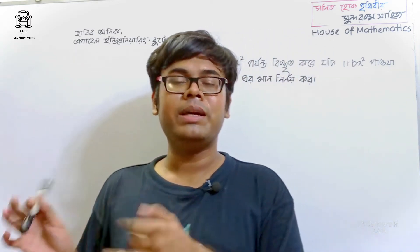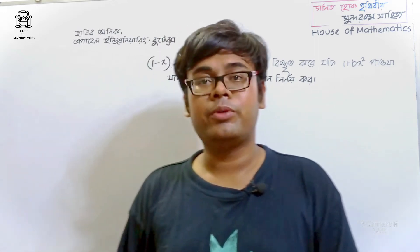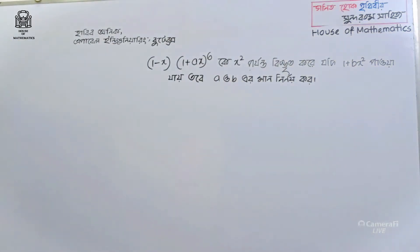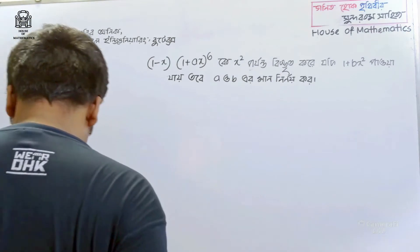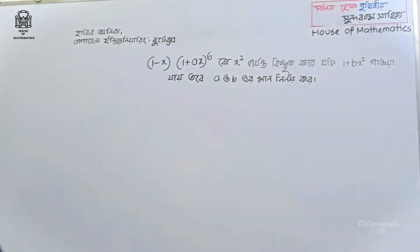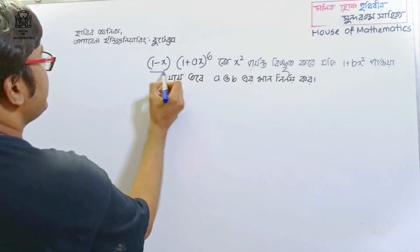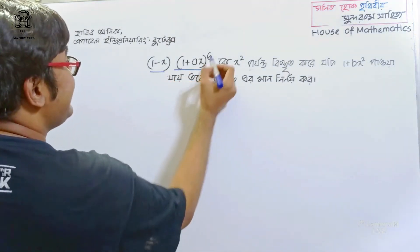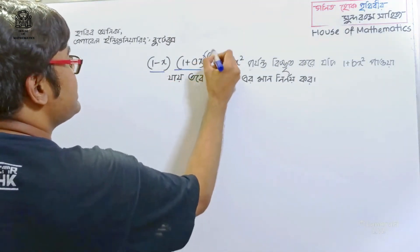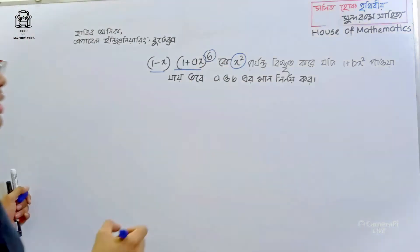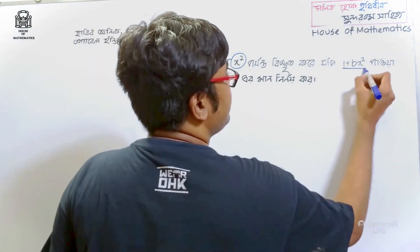Now, let me read the problem. What does the problem say? The expression is 1 minus x, into 1 plus x to the power 6. We will just multiply it out.